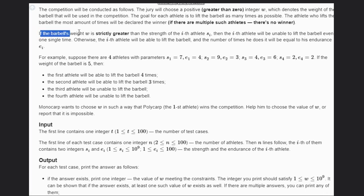If the barbell weight W is strictly greater than the strength of the i-th athlete, then the i-th athlete will be unable to lift the barbell even one single time. Otherwise, the i-th athlete will be able to lift the barbell, and the number of times they do it will be equal to their endurance Ti.